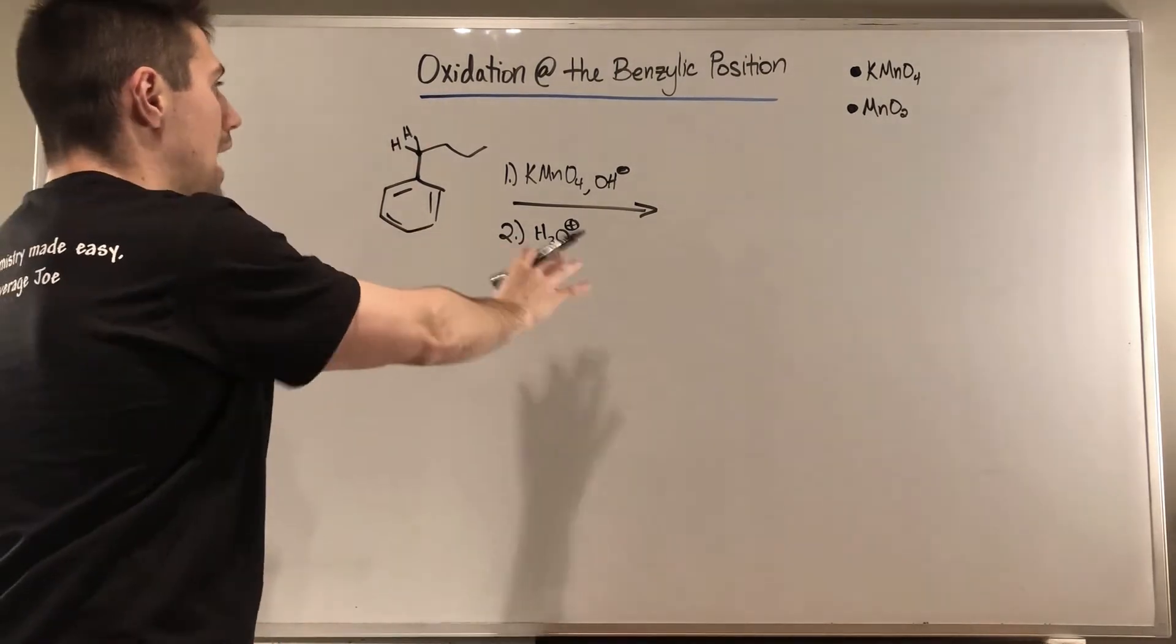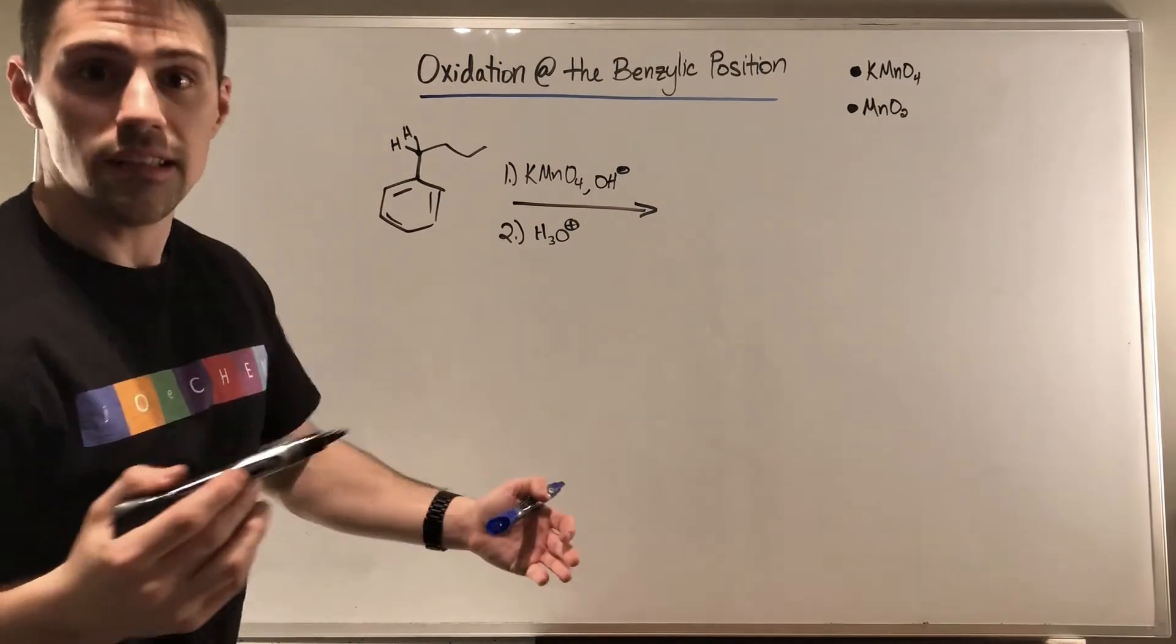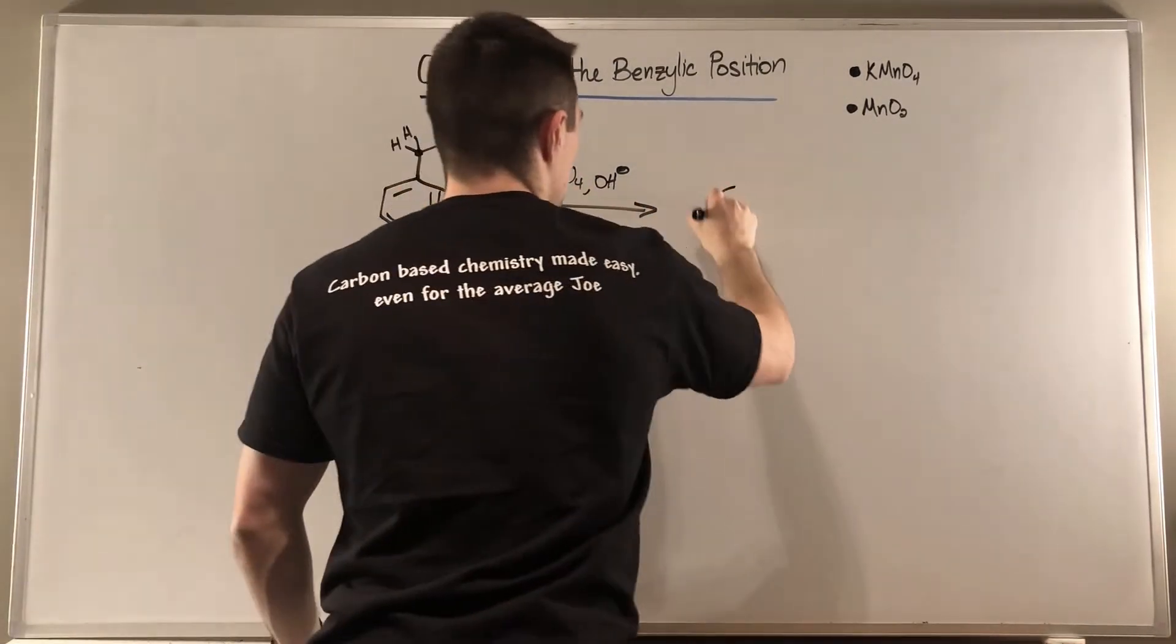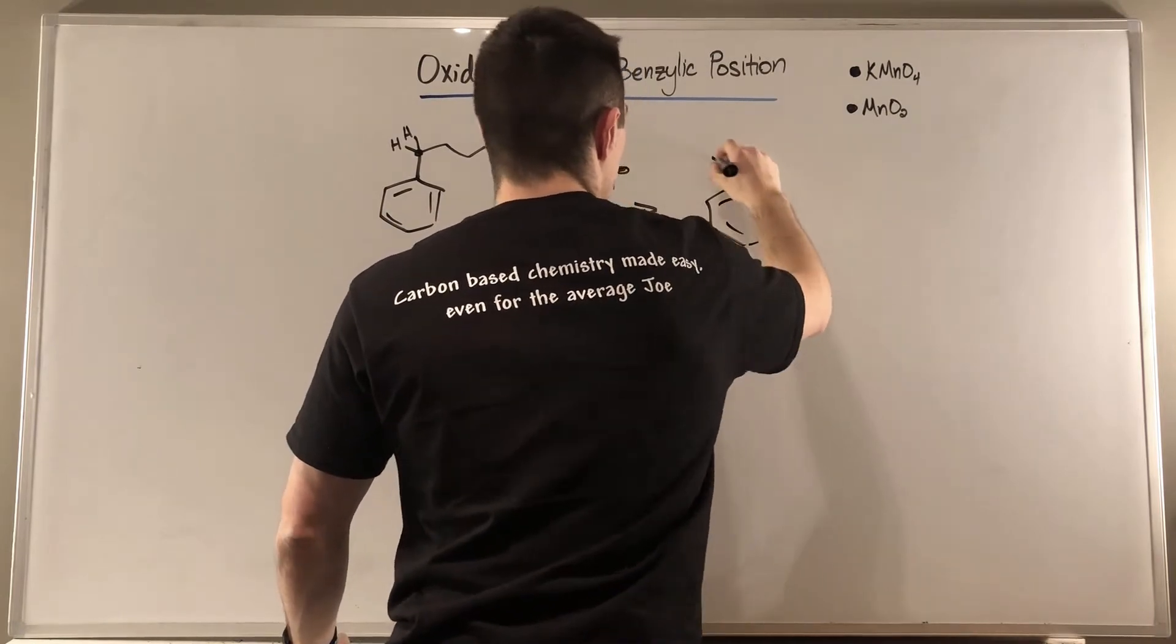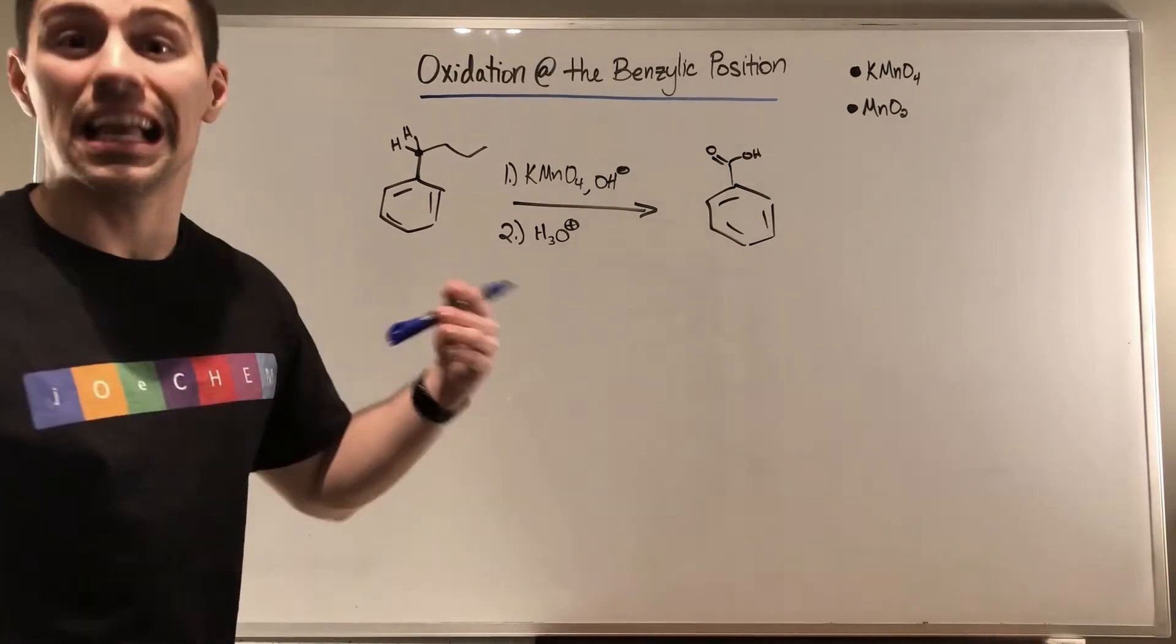So, when you do this reaction, all that's going to happen is you basically cleave whatever the chain is, and you're just going to form a carboxylic acid on the benzylic position. Okay, as simple as that.